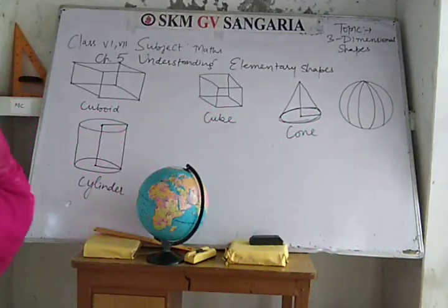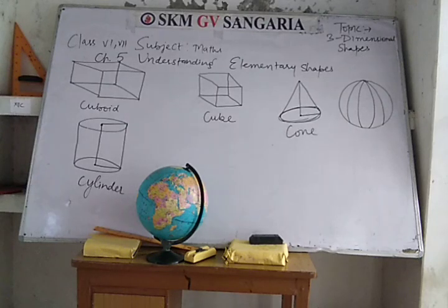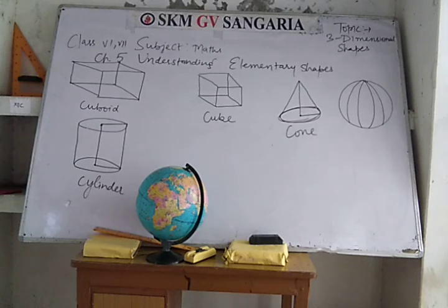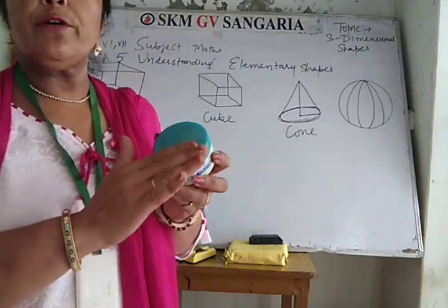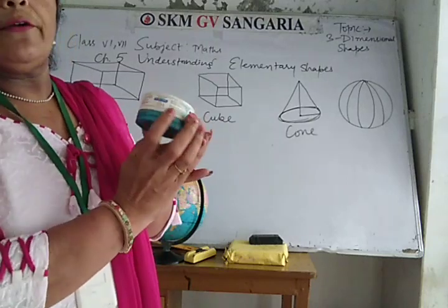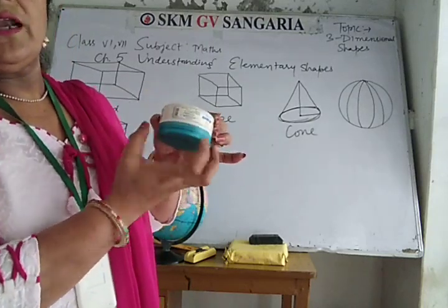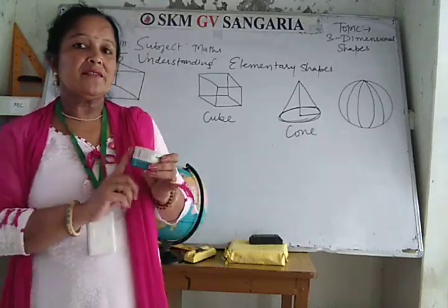About cylinder — it is a solid having two circular bases and a curved surface. It has no straight edge. It has two flat surfaces: this is flat, this is also flat, and this is curved — one curved surface and two flat surfaces.